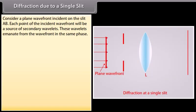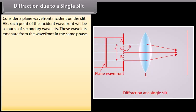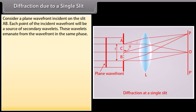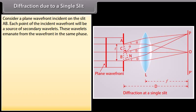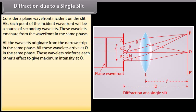Diffraction due to a single slit: consider a plane wavefront incident on the slit AB. Each point of the incident wavefront will be a source of secondary wavelets. These wavelets emanate from the wavefront in the same phase. To understand the formation of the central maximum, the slit can be imagined to be divided into a number of very narrow strips of equal width parallel to the slit. All the wavelets originate from the narrow strip in the same phase and arrive at O in the same phase, reinforcing each other to give maximum intensity at O.